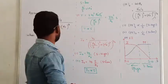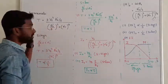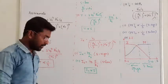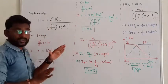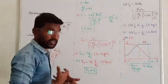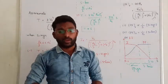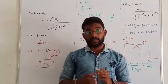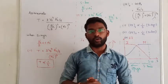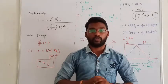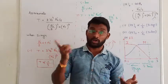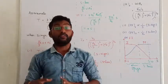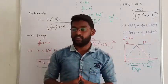Hi guys. So in the last lecture, we saw the approximate torque equation. In the approximate torque equation, if you look at the torque equation, this is an induction machine. In the induction machine, if you look at the torque equation, it will affect the entire system — it will affect the torque, power factor, and current. Every factor is getting affected. Let us see one by one.